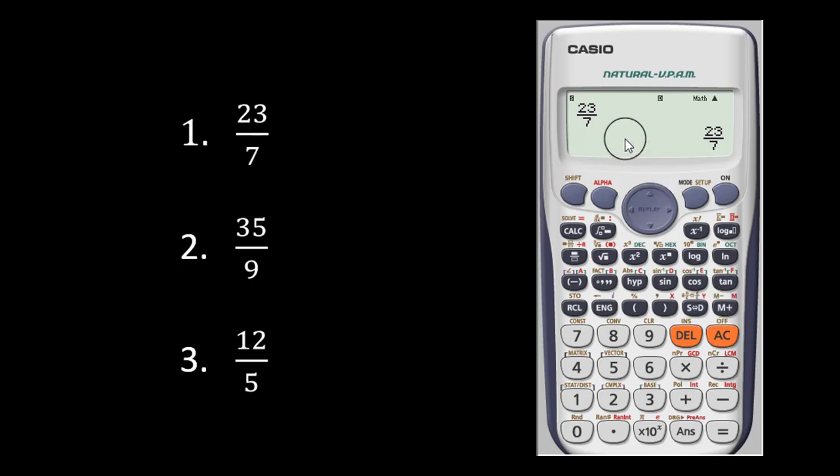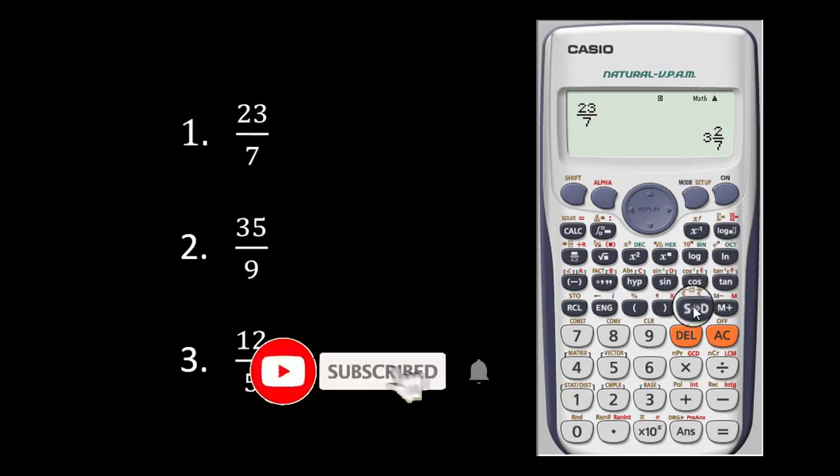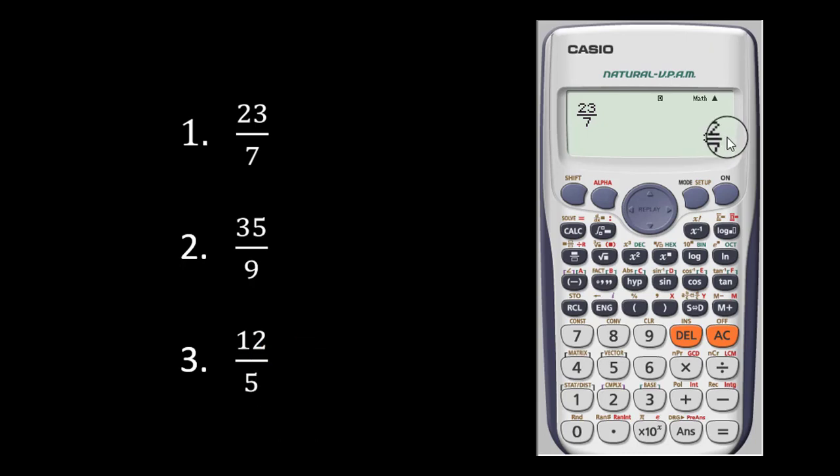So after pressing my shift key, ensure that the S display appears here. And once that display appears, you then press that particular key. And now what do you have? Three whole number, 2 over 7. This is how you convert an improper fraction to a mixed fraction.